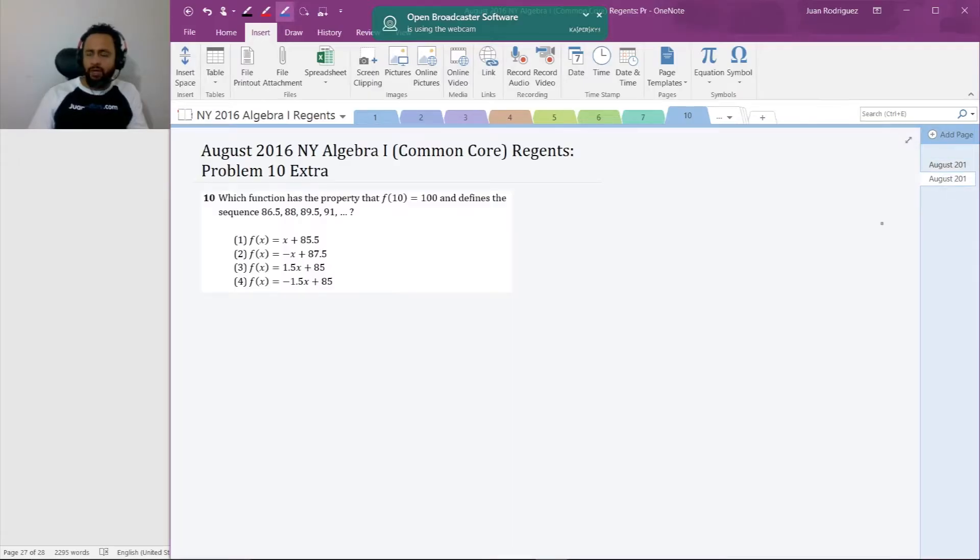So that is in fact our answer. Here's a problem created by us that you can practice on. Which function has the property that f of 10 is 100 and defines the sequence 86.5, 88, 89.5, 91, etc., and it's one of those answers? At this point you should pause the video, try the problem on your own, and when you're finished press play to see our solution. The way we're able to provide these tutorials totally free is by having viewers like you see these videos, so if you like what you see, click the like button, subscribe, let your friends know that these are available.